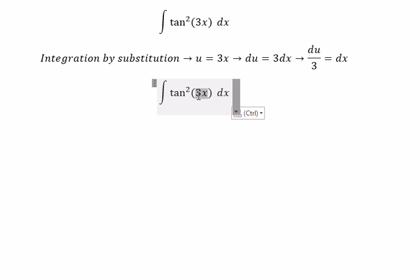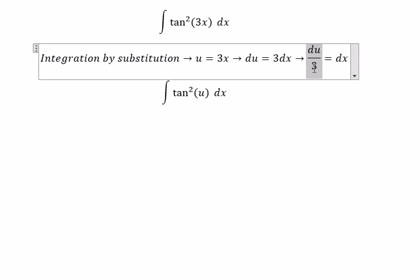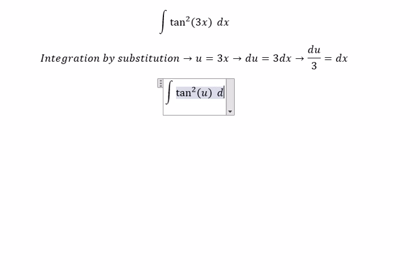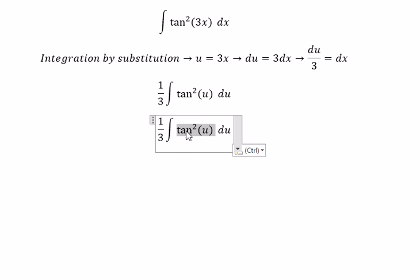So this will change to u, and dx will change to du over 3. Next, we can rewrite this as sec squared of u minus 1.